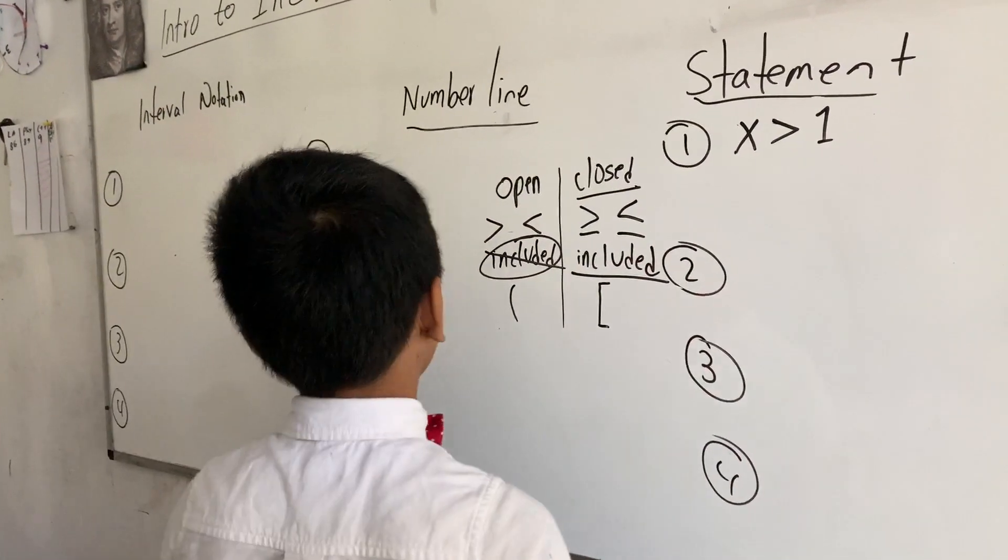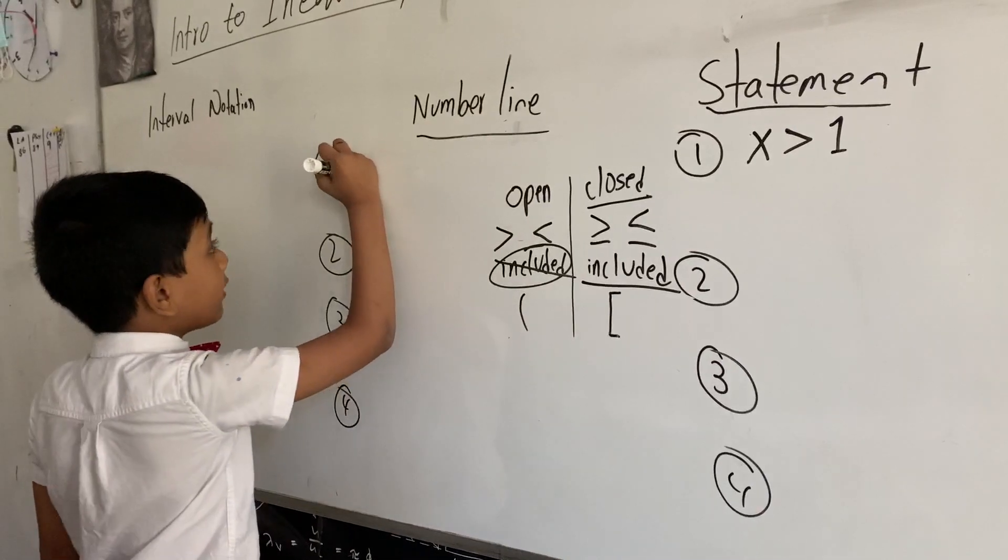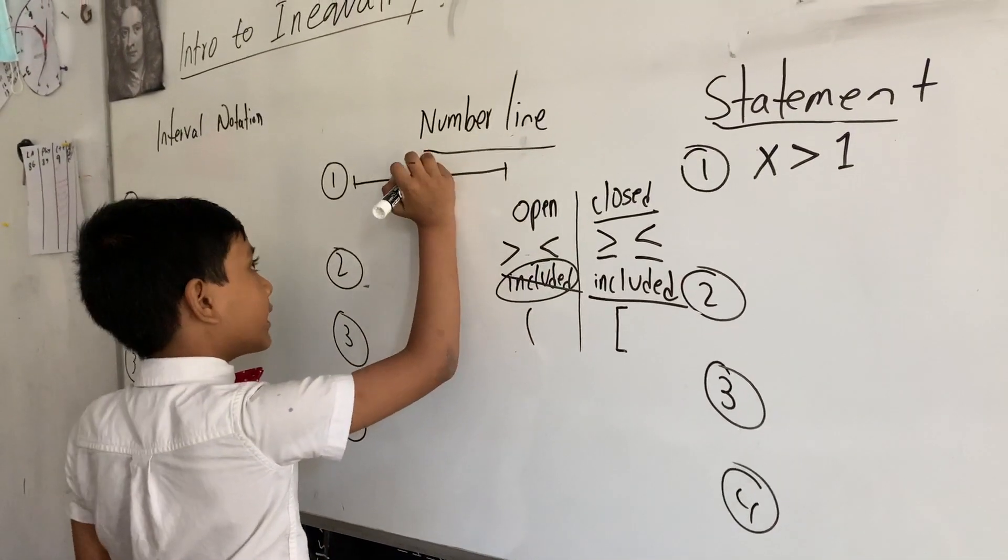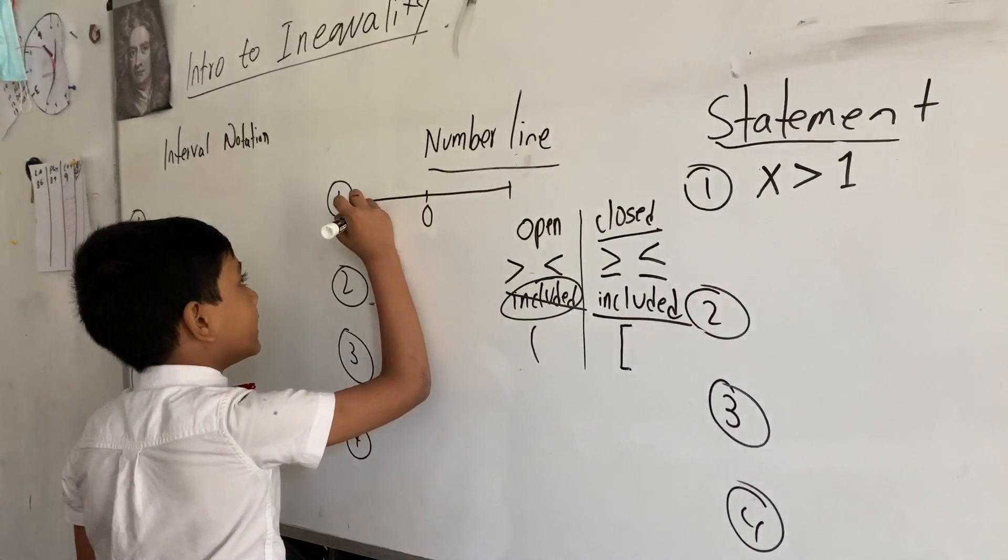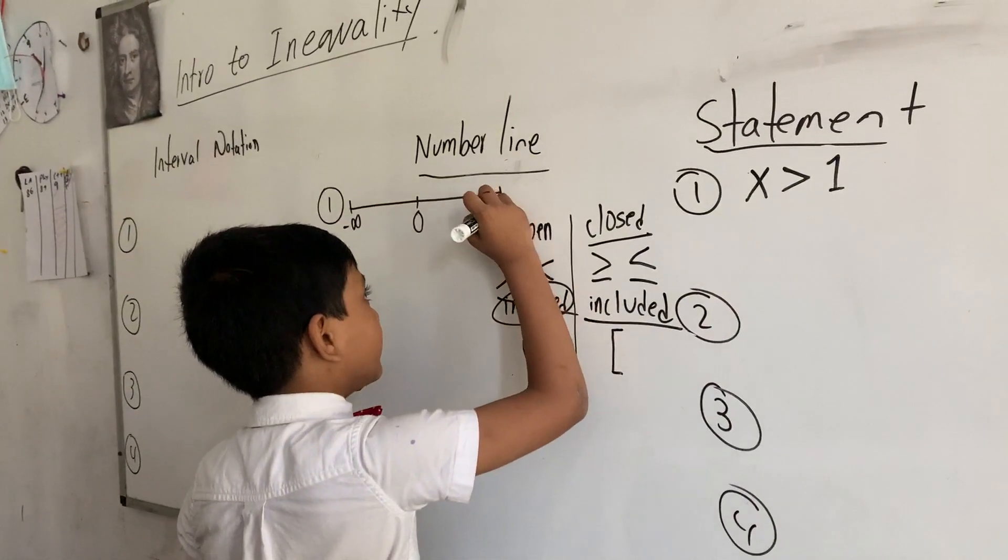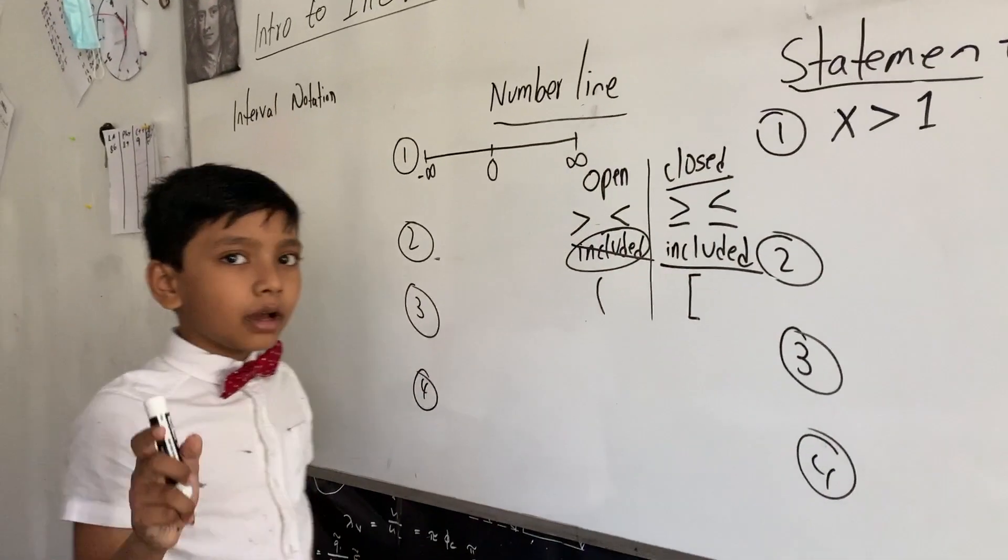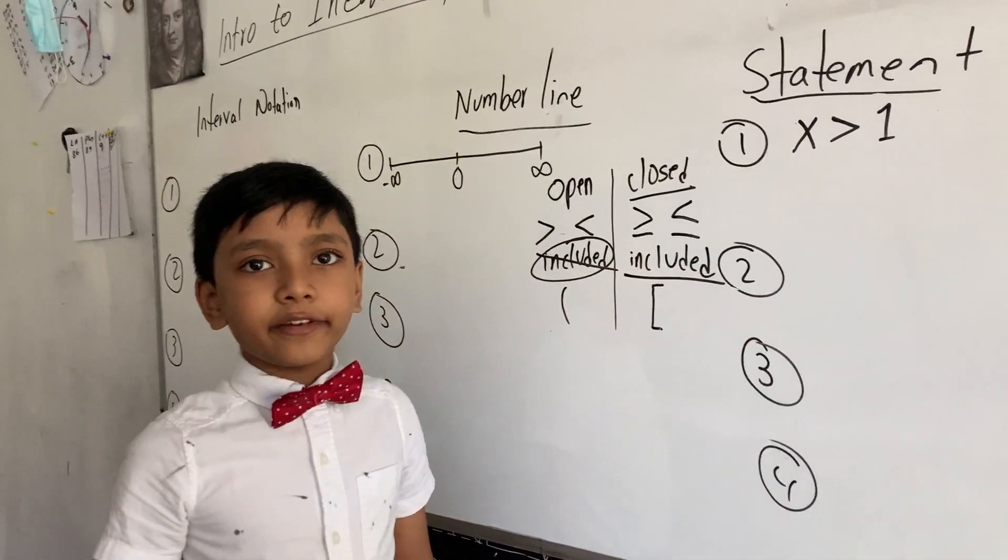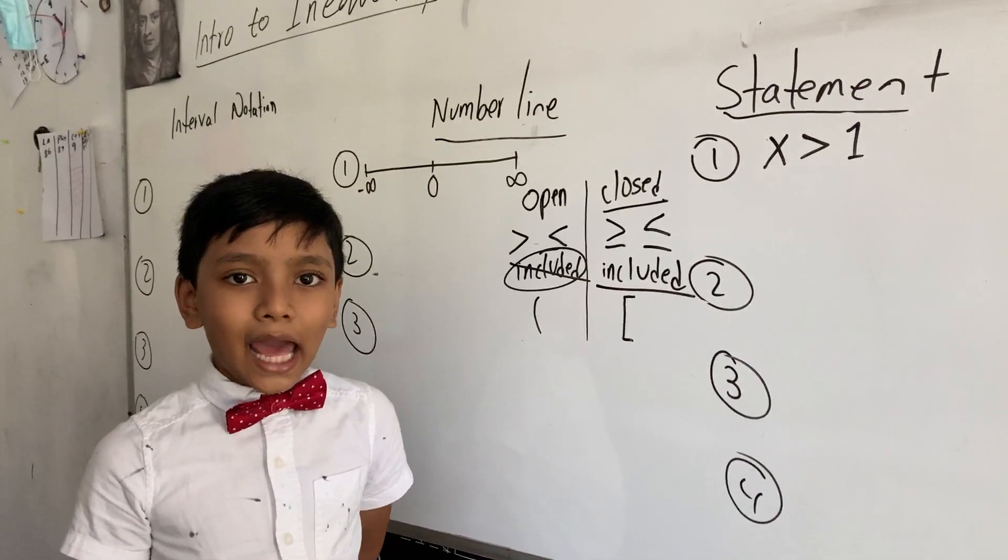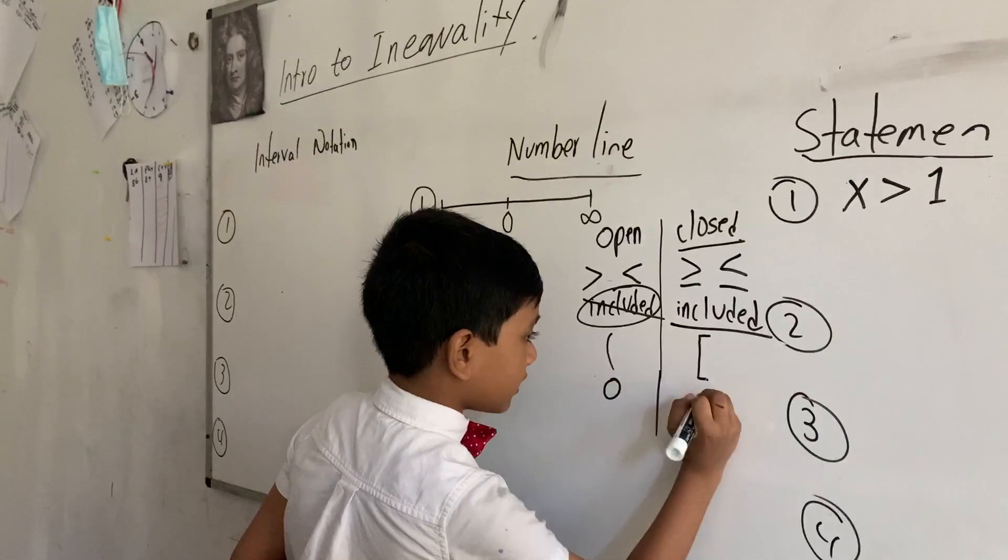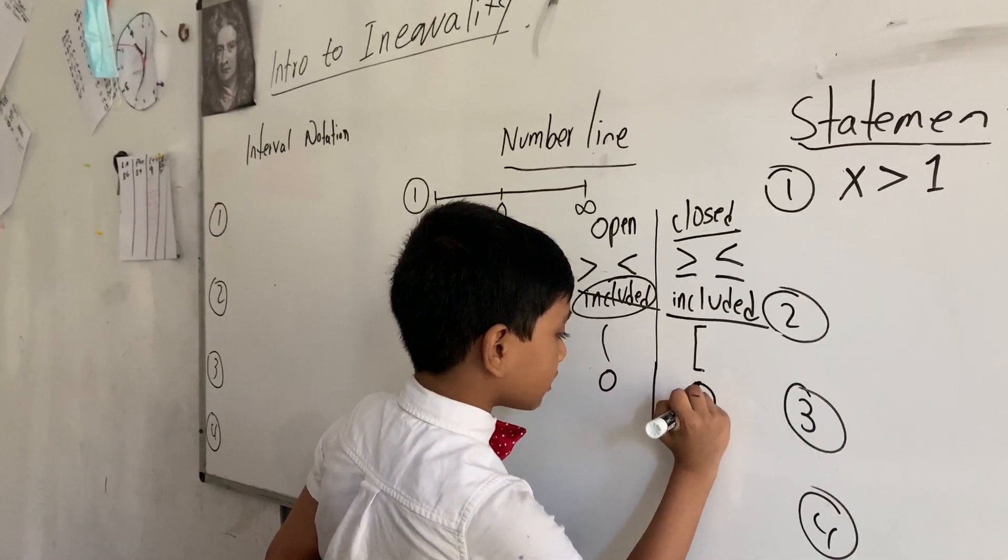Because this is getting complicated, now we don't have much space for our number line, but let's try writing it anyway. So zero, this is negative infinity, and this is positive infinity. Now, be sure to note that the plot of infinity always must have an open circle on it. So it looks like this on the number line.